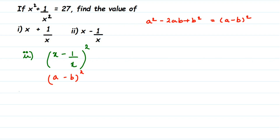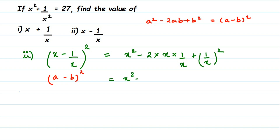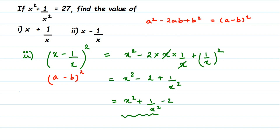Substituting a = x and b = 1/x: a² = x², then minus 2ab = minus 2 × x × (1/x), and b² = (1/x)². The x in numerator and denominator cancel, giving x² - 2 + 1/x². Rearranging: x² + 1/x² - 2, and since x² + 1/x² = 27, this equals 27 - 2 = 25.